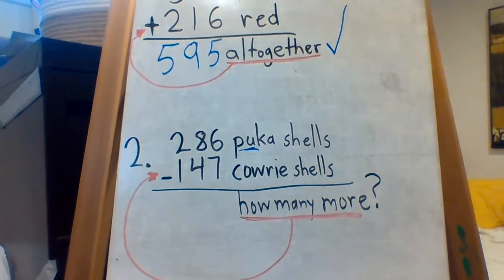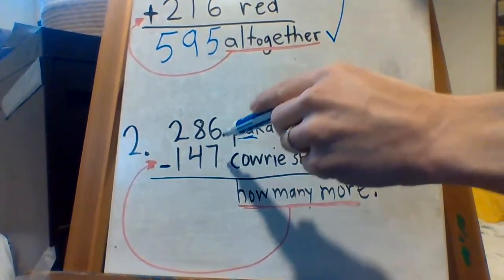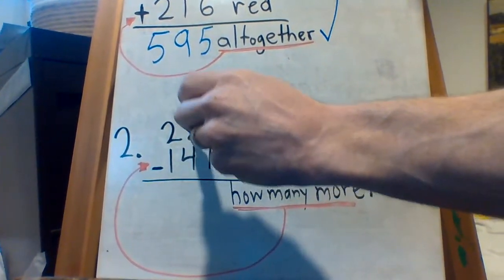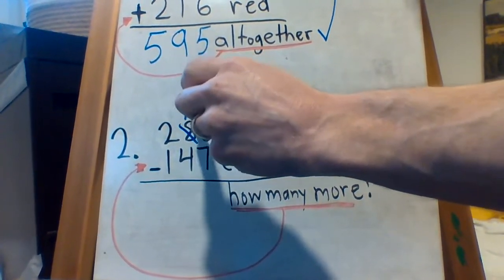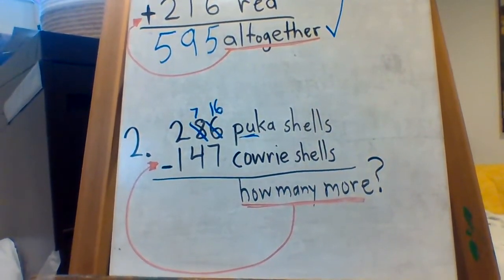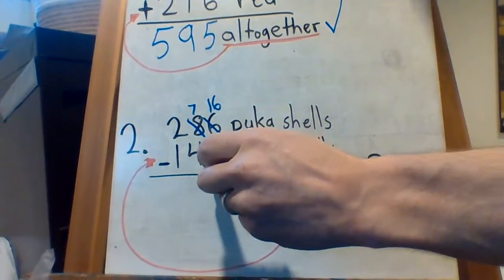Okay, so I see some definite borrowing here, because I can't take 7 when there's only 6 there. Let's put that 8 into a 7. Of course, the 6 will turn into 16, because it's got that extra 10. 16 take away 7 is 9.